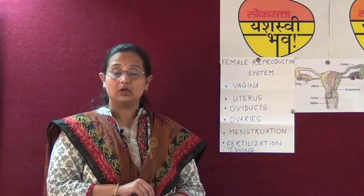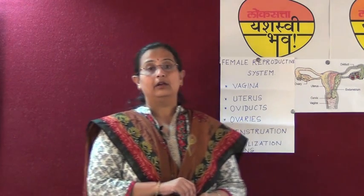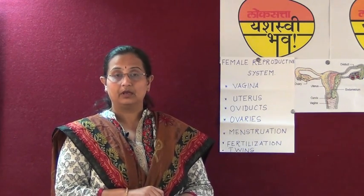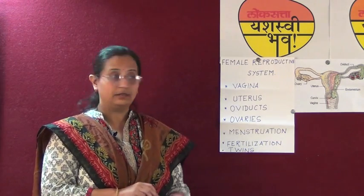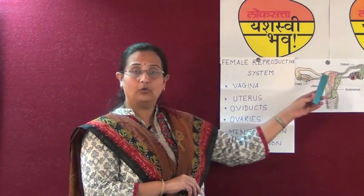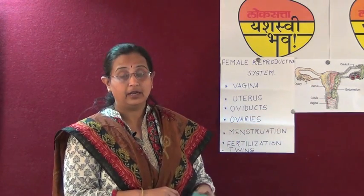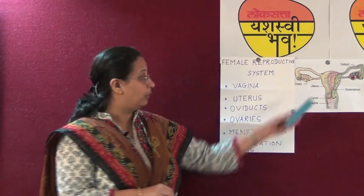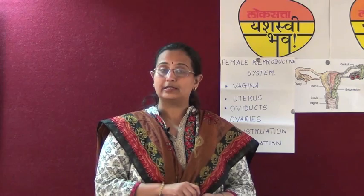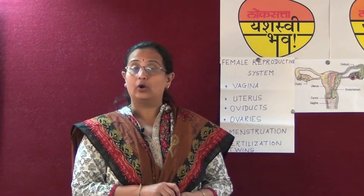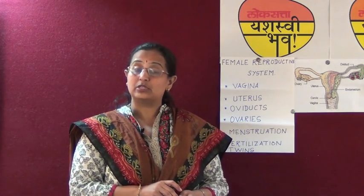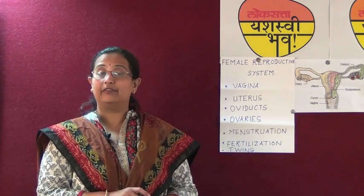The ovaries also release an egg every month. If this egg released from the ovaries does not get fertilized, then this unfertilized egg along with blood and mucus forms a flow. This flow is released from the vagina, which is called as the menstrual flow or the menstrual cycle. This lasts for 3-4 days every month.